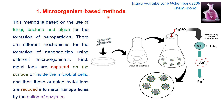The first method is the microorganism-based method, which uses fungi, bacteria, and algae for nanoparticle formation. Metal ions are first captured on the surface or inside of the microbial cell. For example, using a fungal culture, silver nitrate is added, and the nitrate reductase enzyme present in the fungal culture reduces silver ions into silver zero form, which then undergoes nucleation and agglomeration.